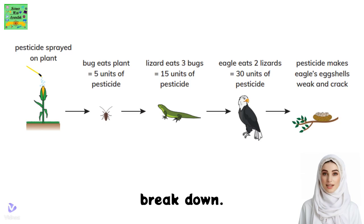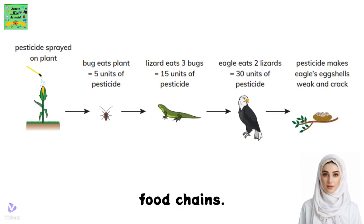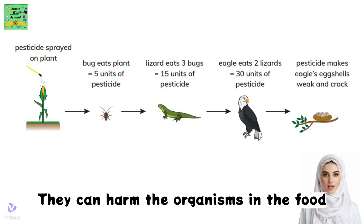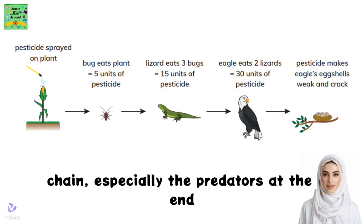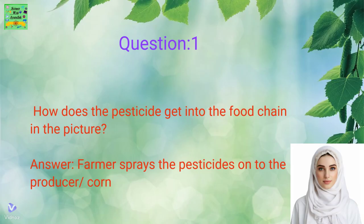Some toxic substances will break down into other harmless substances in the soil or water in the environment. Others stay in the environment and do not break down. These substances build up or accumulate in food chains. They can harm the organisms in the food chain, especially the predators at the end of the chain.